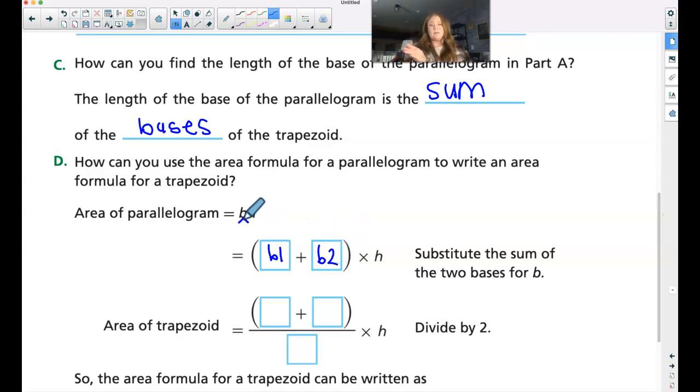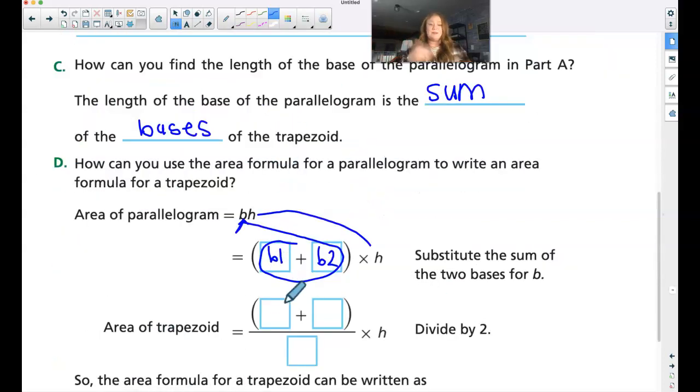Then, see all of this is B, and then we're going to times it by the height. But that gives us a parallelogram, so we want to cut it in half.